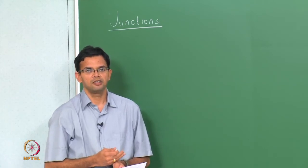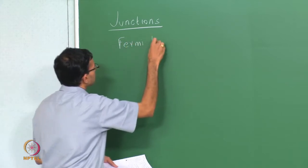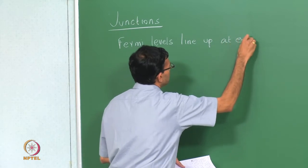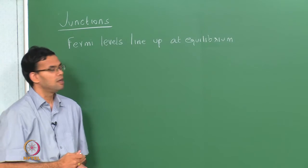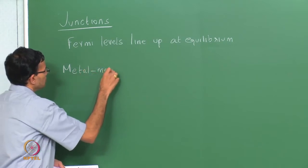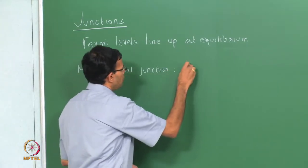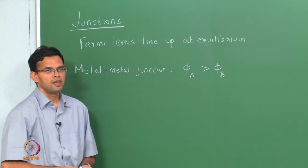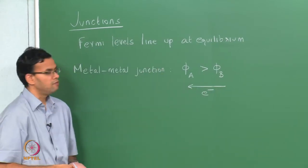Whenever we have a junction at equilibrium, we said that the Fermi levels must line up. Equilibrium is defined as when we have no external potential applied to the system. We first looked at a metal-metal junction, with two metals A and B with work functions phi A and phi B, where phi A is greater than phi B. In such a case, electrons will move from B to A and this will create a contact potential.